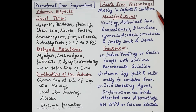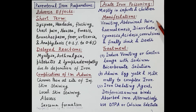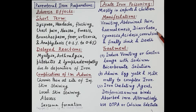Acute iron poisoning refers to iron overload and occurs due to administration of iron preparations in high doses. It is rare in adults but common in infants and children. Manifestations include vomiting, abdominal pain, hematemesis (vomiting of blood), diarrhea, cyanosis, acidosis, convulsions, and finally shock and death.